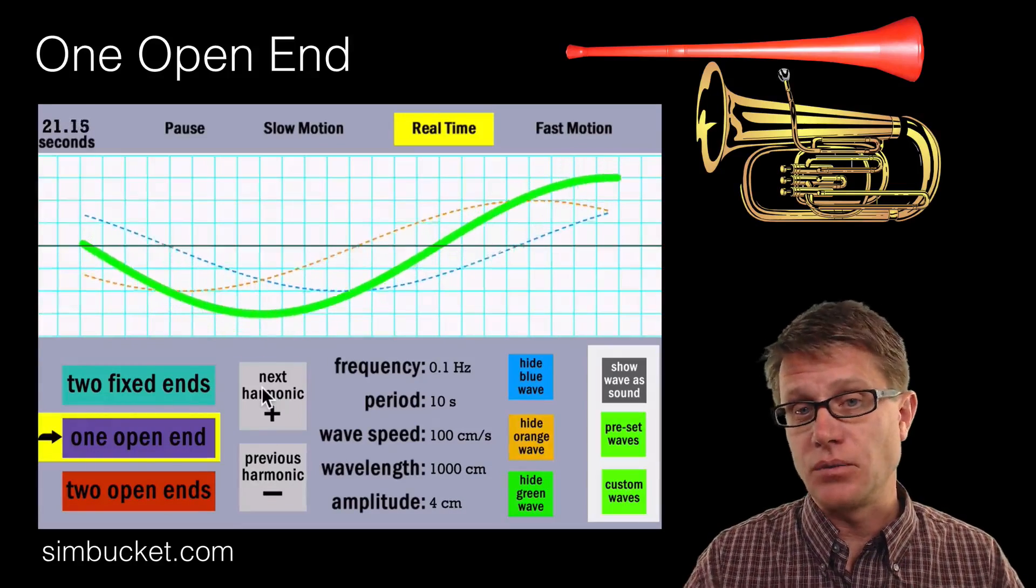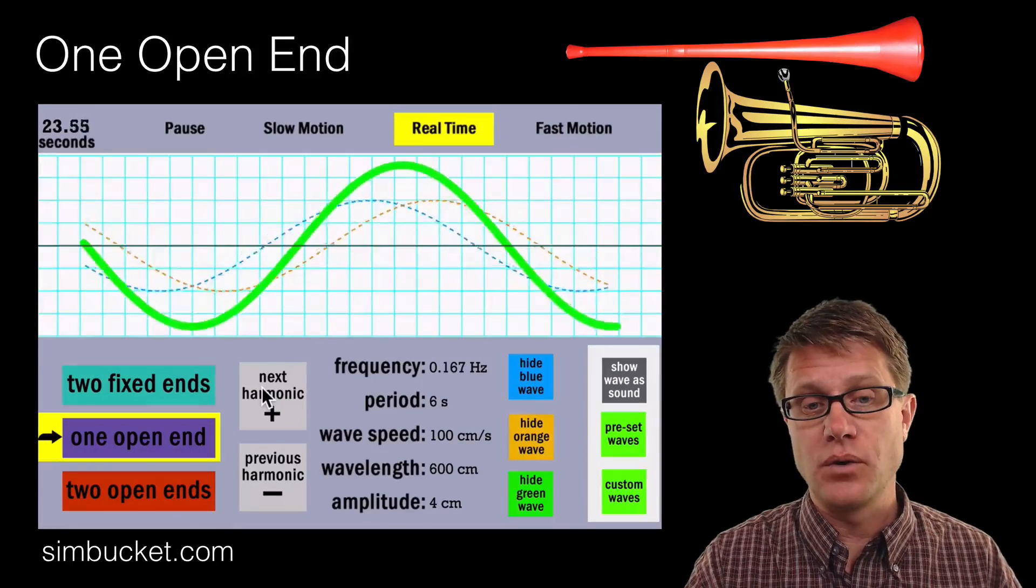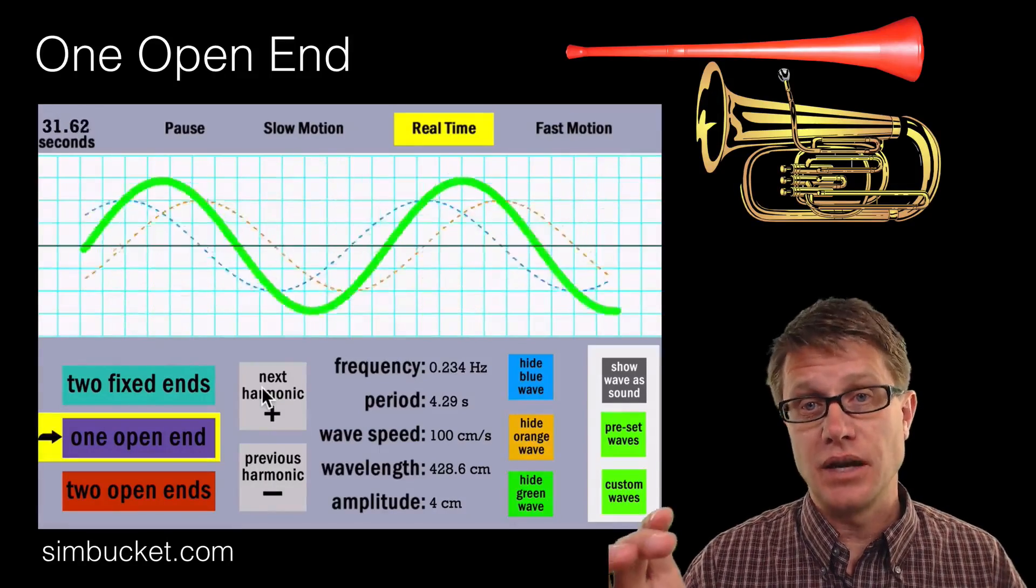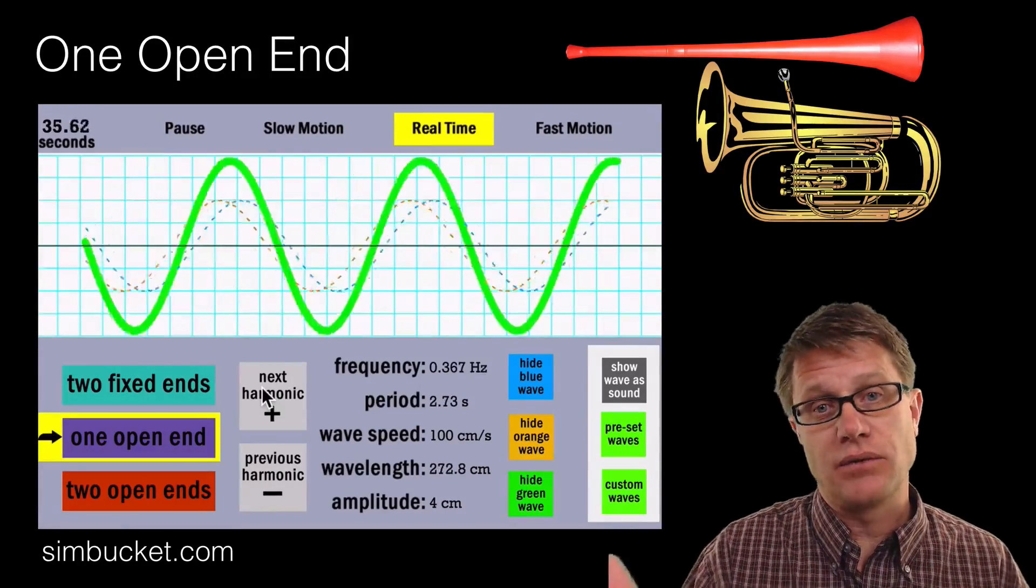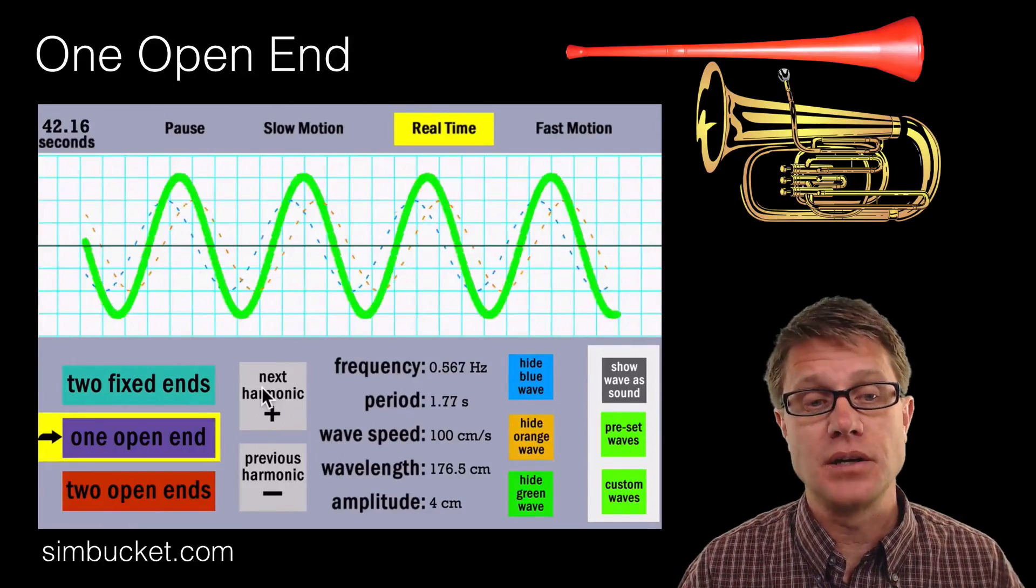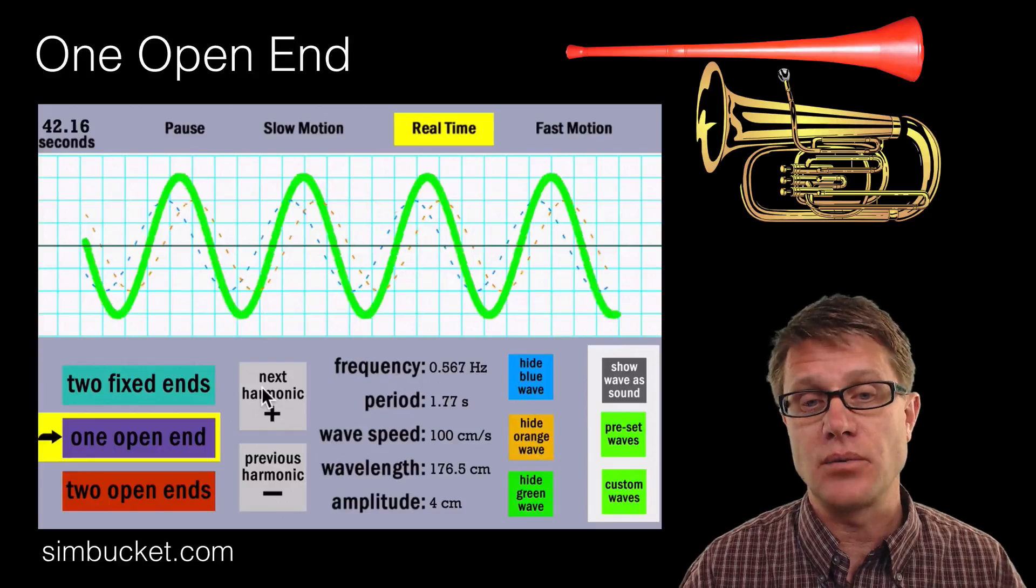And so we still have those traveling waves going back and forth and back and forth. It is just that one of those ends is free to create an anti-node. And then we just have reflection off of that end. These are all the different harmonics. What keeps them all in common is the node on the left, anti-node on the right.